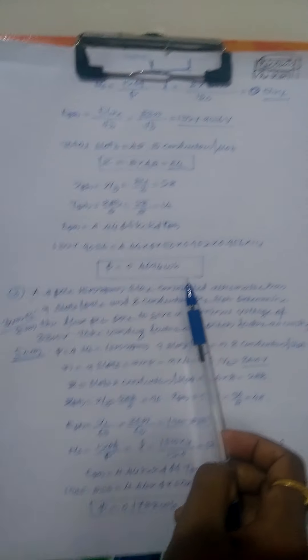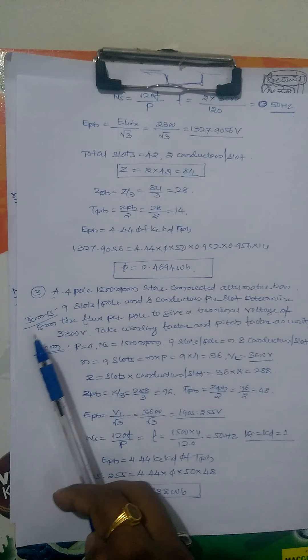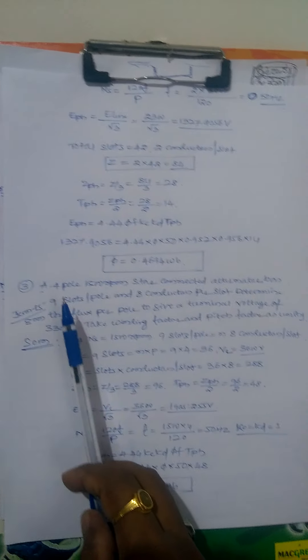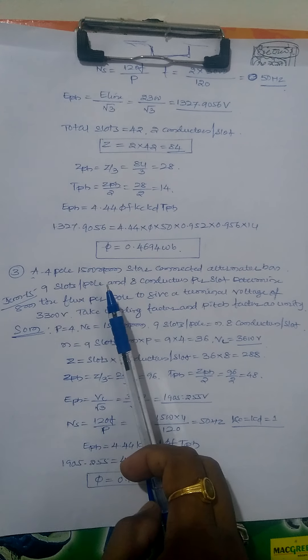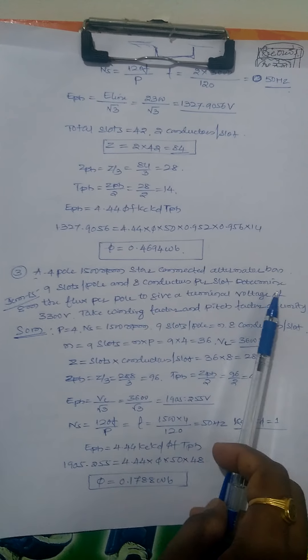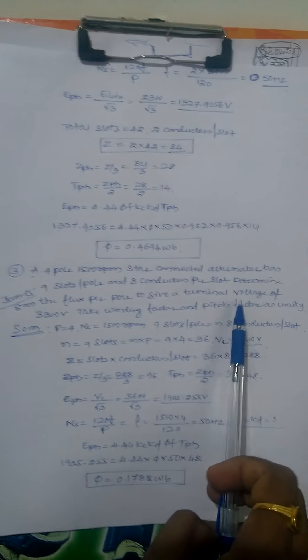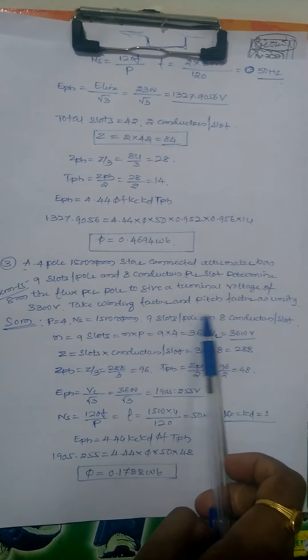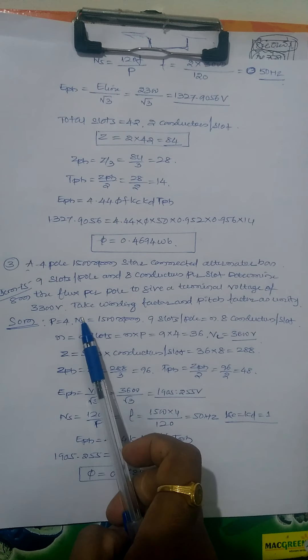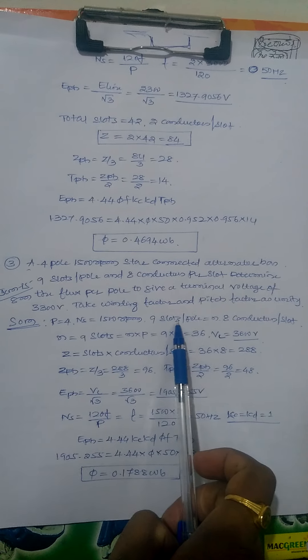Third problem is from exam 2015 January, worth 8 marks. A 4-pole 1500 rpm star-connected alternator has 9 slots per pole with 8 conductors per slot. Determine flux per pole to keep terminal voltage at 3300 volts. Take winding factor and pitch factor as unity.